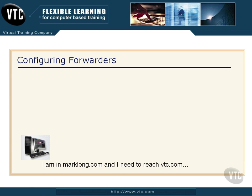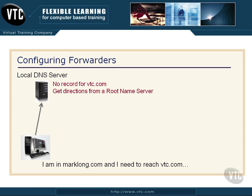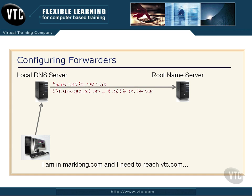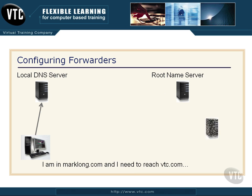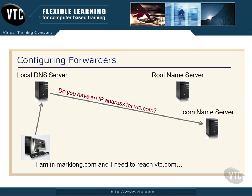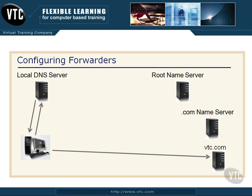I'm in marklong.com and I'm trying to reach vtc.com. So I type in vtc.com — it goes to my local DNS server. The DNS server says, I don't know where vtc.com is, let me connect you to a root name server. So it sends me to a root name server, which sends back the IP address for the .com name server and says, ask them. I'm then connected to the .com name server — do you have an IP address for vtc.com? And they say yes, here it is. Now I go to vtc.com, get the address, it's returned to me, and then I can connect.